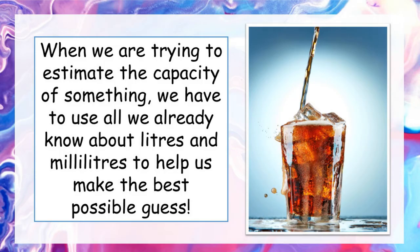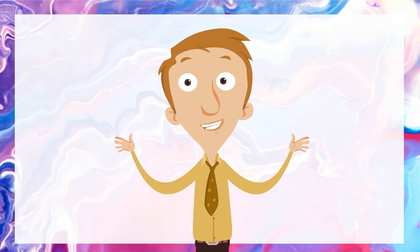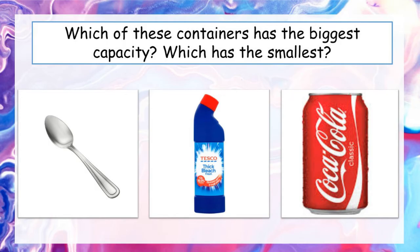Let's try our hand at a few estimating questions. We'll start off simple and gradually get more difficult as the lesson goes on. First, I'm going to show you three containers. All I want you to do is figure out which one has the biggest capacity and which one has the smallest. We've got a teaspoon, a bottle of bleach that you might see in your home, and a can of Coca-Cola. Pause the video and give it your best estimate.